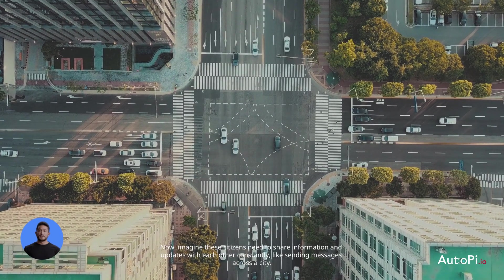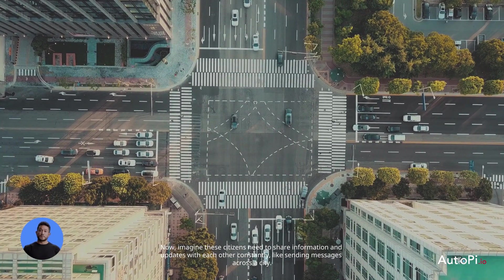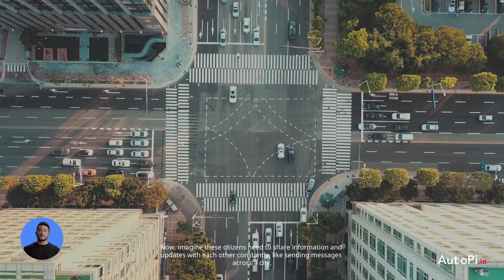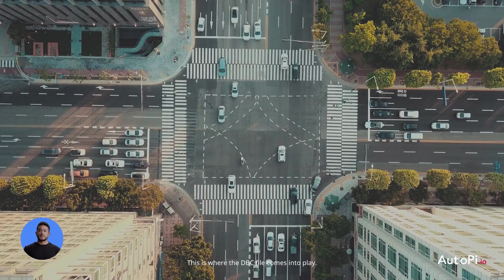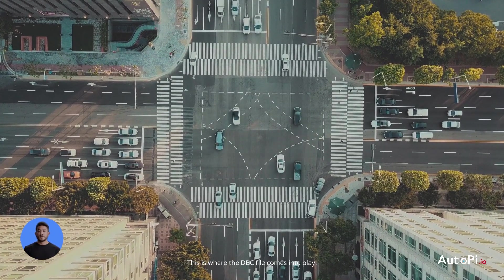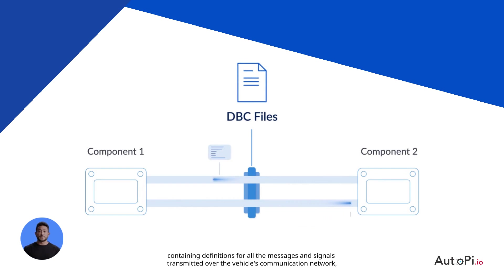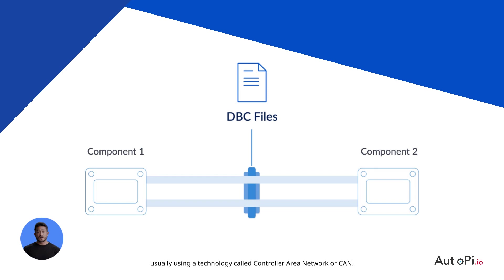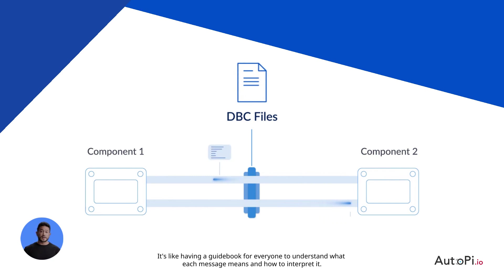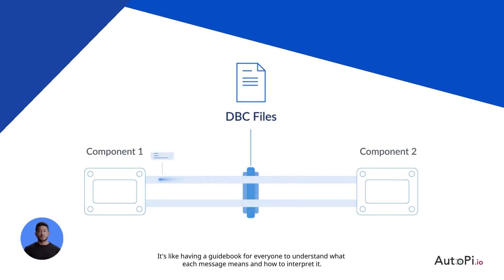Imagine these citizens need to share information and updates with each other constantly, like sending messages across a city. This is where the DBC file comes into play. The DBC file serves as a master dictionary, containing definitions for all the messages and signals transmitted over the vehicle's communication network, usually using a technology called Controller Area Network, or CAN. It's like having a guidebook for everyone to understand what each message means and how to interpret it.